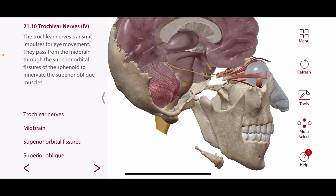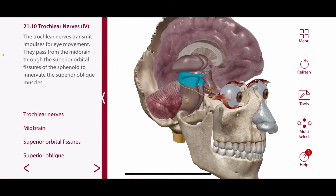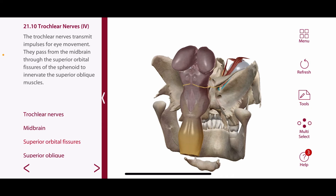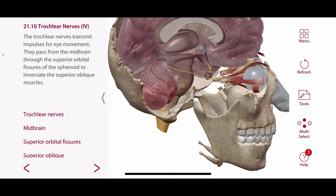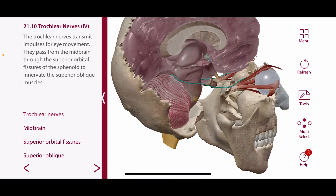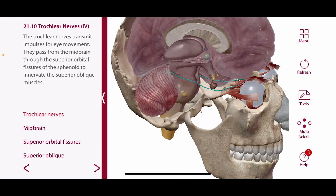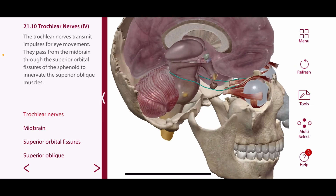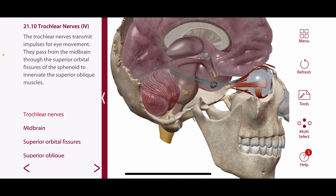Cranial nerve number 4 is the trochlear nerve. Its function is to control the superior oblique muscle. The origin is the midbrain and the foramen is also the superior orbital fissure. A useful formula to remember is SO4: superior oblique, trochlear nerve, cranial nerve number 4. There is one motor nucleus, the trochlear nucleus, which lies at the level of the inferior colliculus. The trochlear nerve is the smallest cranial nerve and it emerges from the dorsal aspect of the midbrain, then decussates within the brainstem. It is the only cranial nerve that exits the brain dorsally and is crossed, meaning the fibers cross to the contralateral side before emerging from the brain.